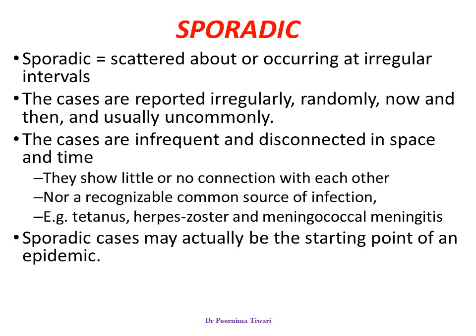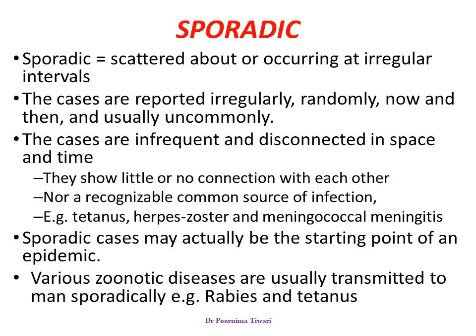Sometimes sporadic cases may actually be the starting point of an epidemic — you see one sporadic case, then another doctor reports the same, and a connection can be seen in proximity or in time. Zoonotic diseases are usually present sporadically; for example, rabies and tetanus.